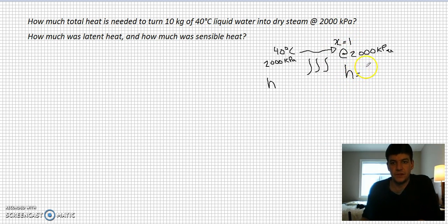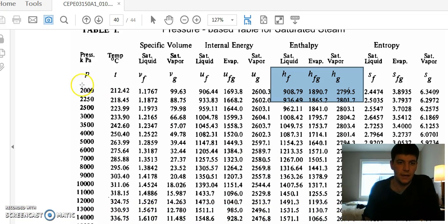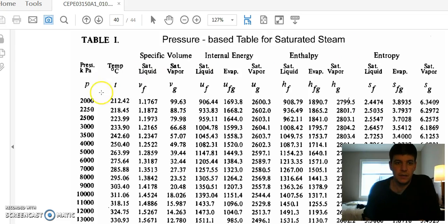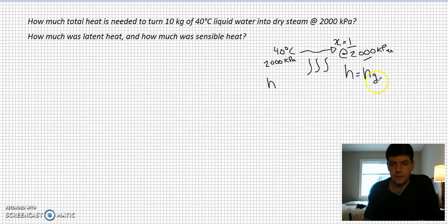I'm given a pressure and X equals 1, so it's going to be my HG value at 2000 kPa. If I go to my steam tables, my pressure-based table here, my HG value at 2000 kPa is 2799.5 kilojoules per kilogram.